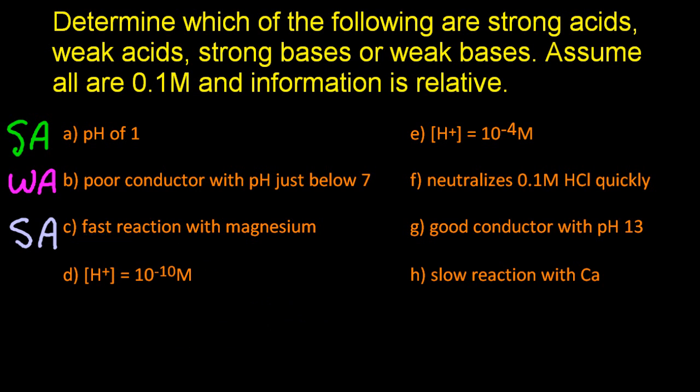For D, the hydrogen ion concentration is 10 to the minus 10 molar, which gives me a pH of 10. It's above 7, so it must be basic, but not much above 7, so it must be a weak base.